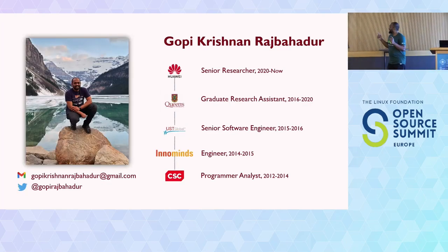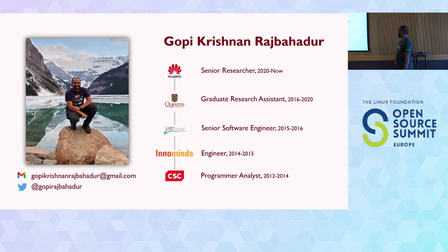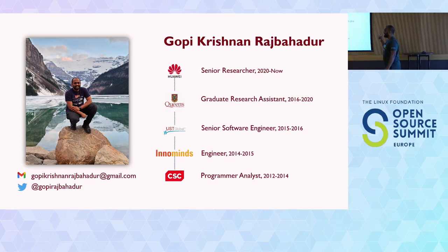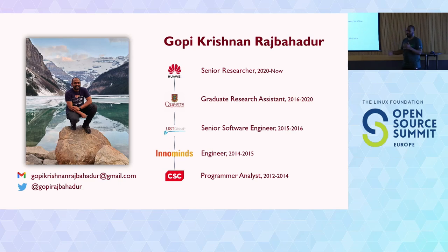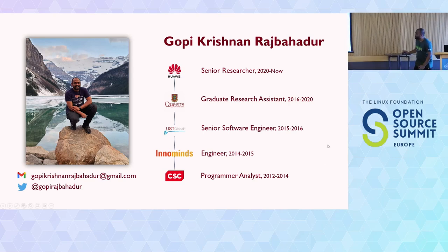A little bit about myself. My name is Gopi Krishnan Rajpahadur and I started my career as a Programmer Analyst in CSE in India back in 2012. I started doing COBOL programming for two years, then I went into data science, doing data science pipelines. I moved into a senior software engineer role, then did four years of research at Queen's University. Now I work as a senior researcher at Huawei, where I look into AI engineering, dataset licensing, and all of the fun stuff.